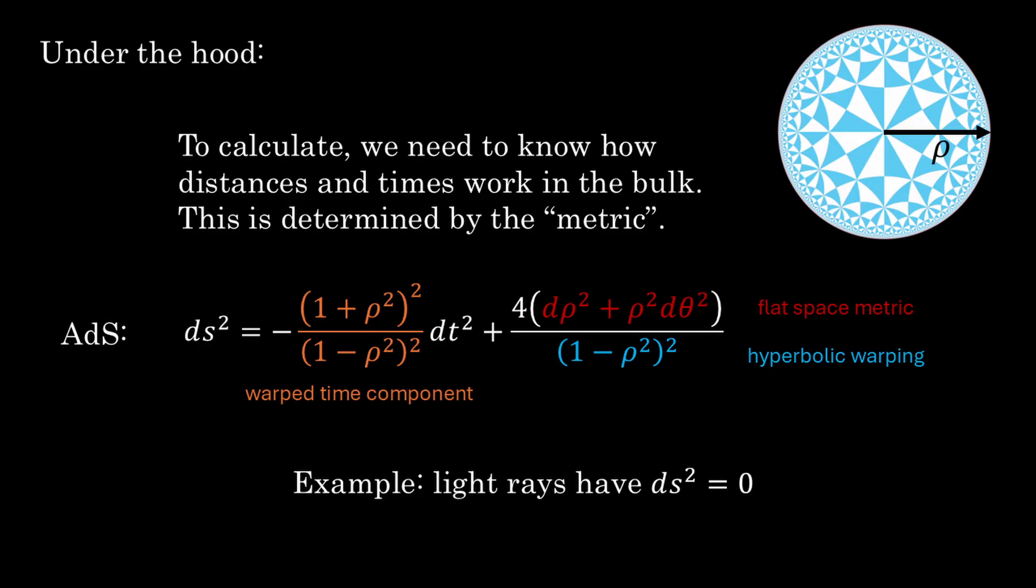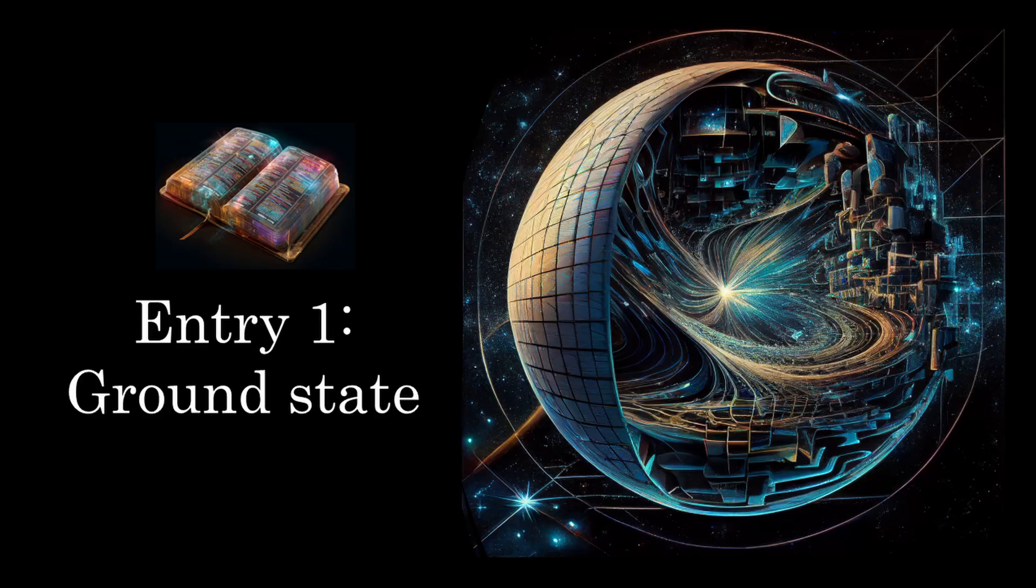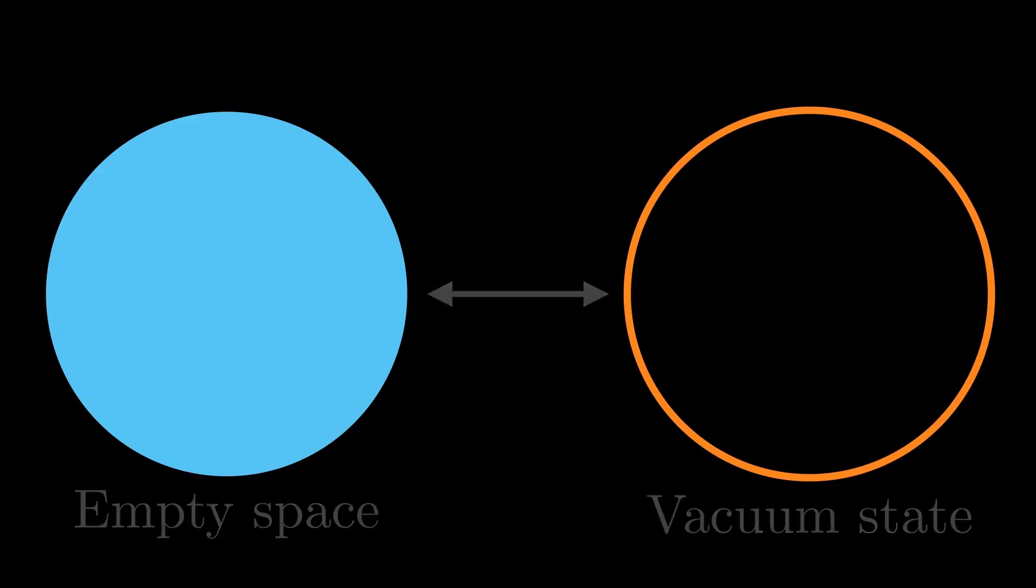We also need to introduce the idea of a cutoff. To regulate the infinite distances that are possible in hyperbolic space, we pick a point which will become the center of the space and draw a circle a very large radius centered on that point. This circle becomes our cutoff surface, and by removing the part of the bulk outside the circle, we obtain a finite patch of hyperbolic space. With these ingredients in hand, we can now state our first entry in the ADS-CFT dictionary. The ground state of the CFT is dual to empty ADS space.